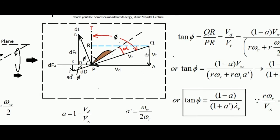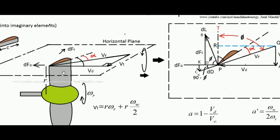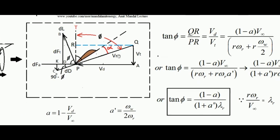Coming to the topic, this is Vr — the relative velocity of wind with respect to the segment we are choosing in blade element method. This is angle phi, the angle that Vr makes with the tangential direction. What will be tan phi? If this is angle phi, you can consider this right angle triangle P, R and Q. Angle R, P, Q is actually phi.